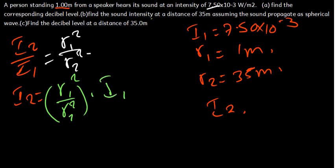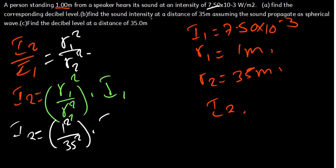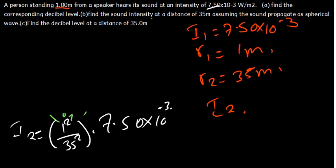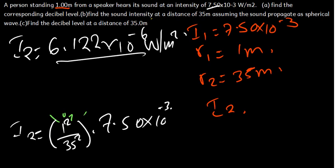The answer we get is 6.122 times 10 raised to the power negative 6 watts per square meter. So the intensity I₂ is 6.122×10⁻⁶ W/m². This is our answer for Part B.